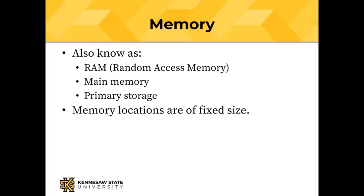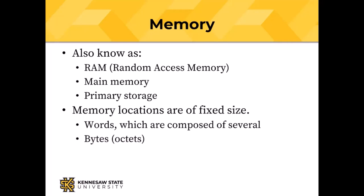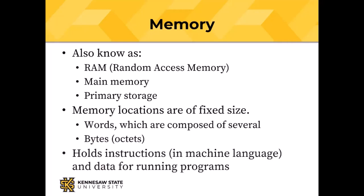Typically transfers happen in units of more than one byte, so if I have a computer with a 64-bit word we're going to transfer 8 bytes at a time between the CPU and the memory. Bytes are 8 bits, also called octets, and the instructions in machine language and the data necessary for running a program are held in main memory.